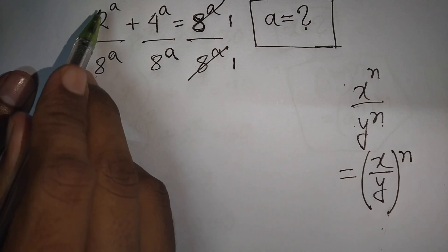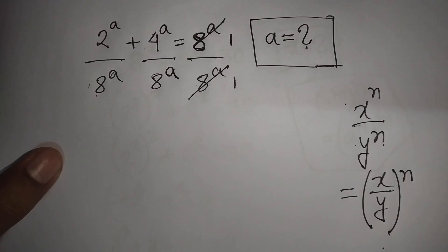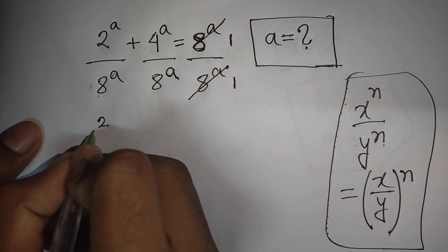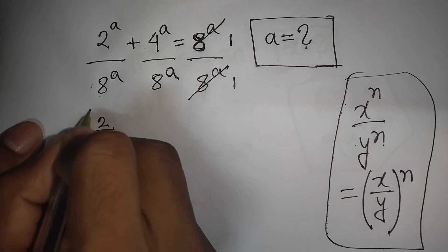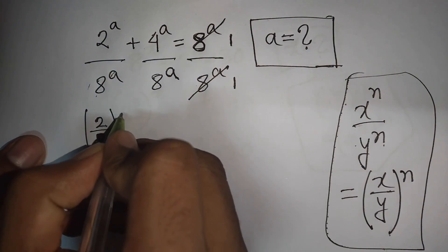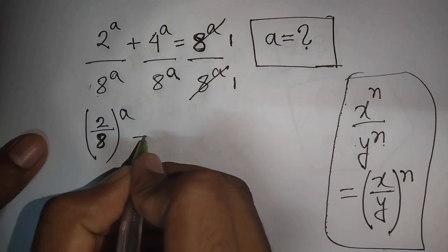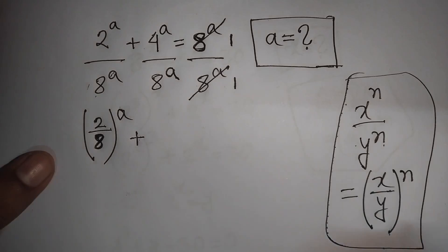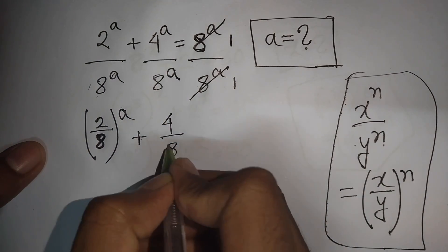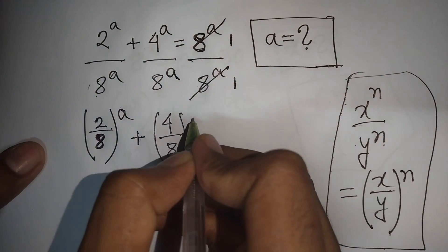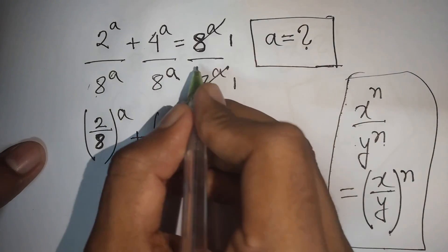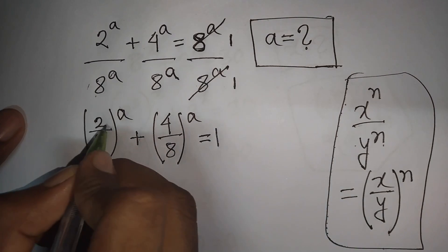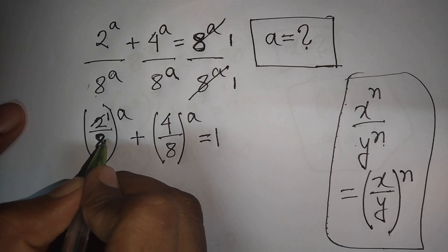Here we have same power 'a' but different bases. According to this exponential rule, we can write 2 over 8, bracket raised to power a, plus 4 over 8, bracket raised to power a, and this is equal to 1.